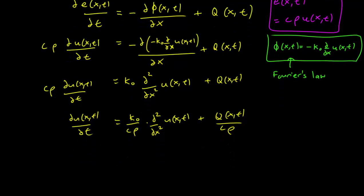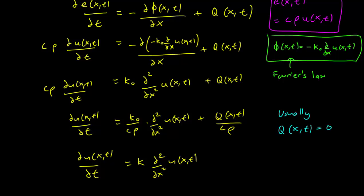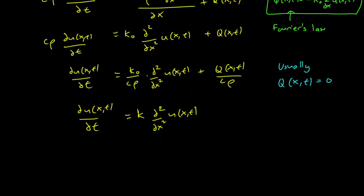Now usually we want to set Q as 0. Sometimes we don't but in most cases we don't want the rod to generate heat on its own. So we set Q(x,t) equals 0 and then this leaves us with this rather simple equation: partial u(x,t) partial t equals k second derivative of u(x,t) and k is of course equal to k_0 over c rho.